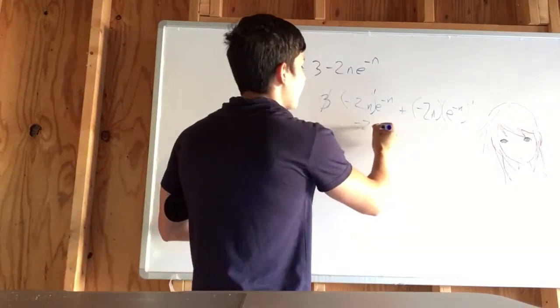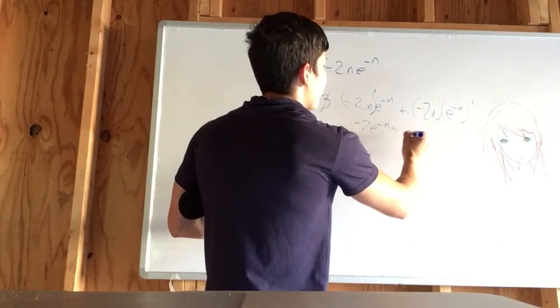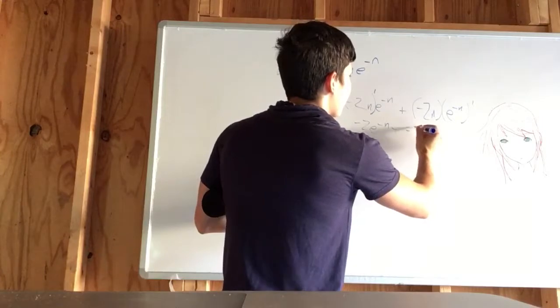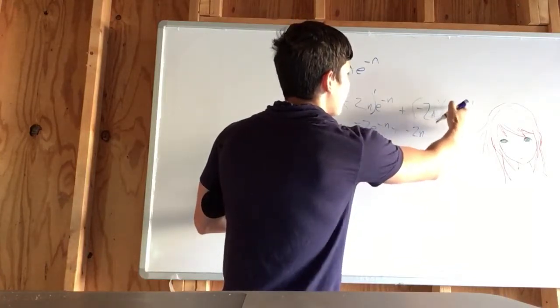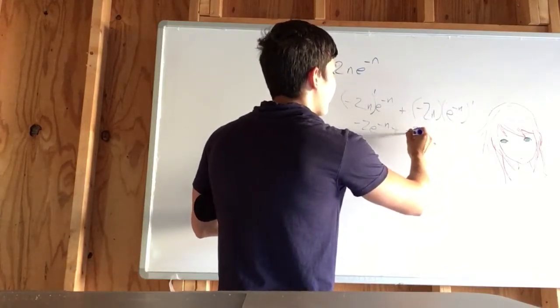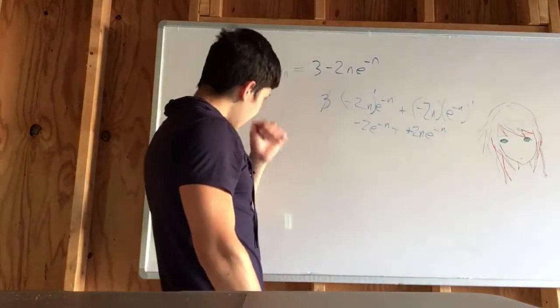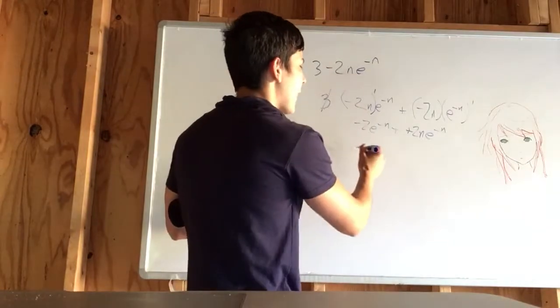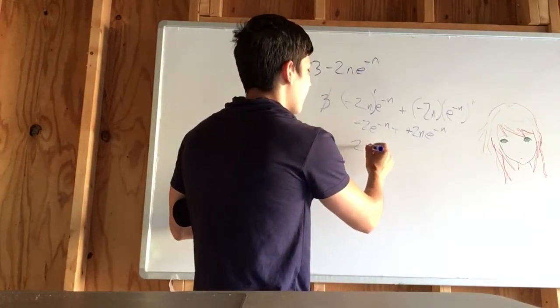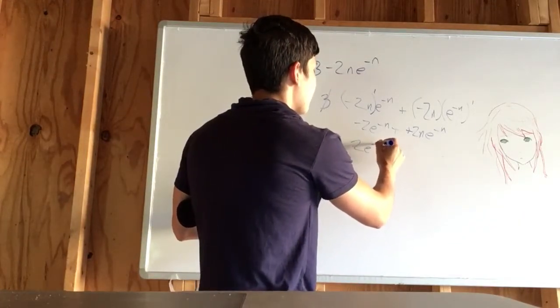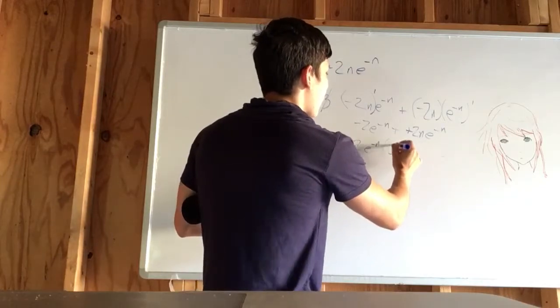So here we get negative 2e to the negative n, and we're adding negative 2n. You bring in the negative from over there, this becomes a plus e to the negative n. So now we can factor out 2e to the negative n.